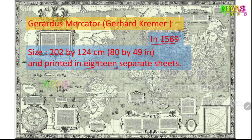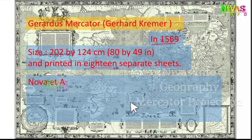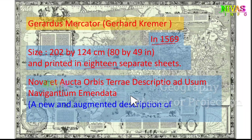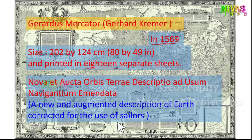Next, this map has a title. It is called 'Nova et Aucta Orbis Terrae Descriptio', which means 'New and Augmented Description of Earth'.